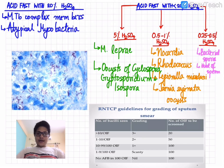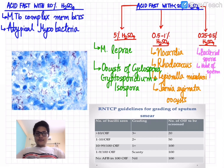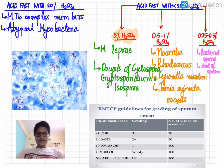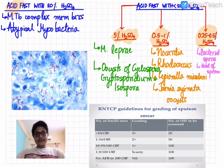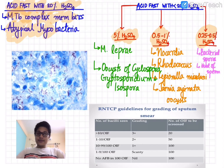The Ziehl-Neelsen stain has been modified. When asked about modifications, a common misconception is to jump to the Quinone or Gabbett stain, but the actual modification is using different concentrations of the decolorizer: 0.5–1%, 5%, or 0.25–0.5% sulfuric acid. With 20% sulfuric acid, all members of the Mycobacterium tuberculosis complex as well as atypical mycobacteria are acid fast. For atypical mycobacteria, Runyon's classification is very important.